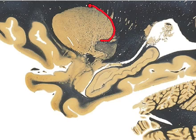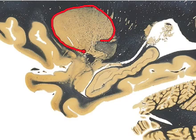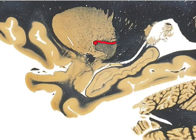This big structure is the putamen, part of the basal ganglia, and this structure would be the globus pallidus, probably the external segment, also a part of the basal ganglia.